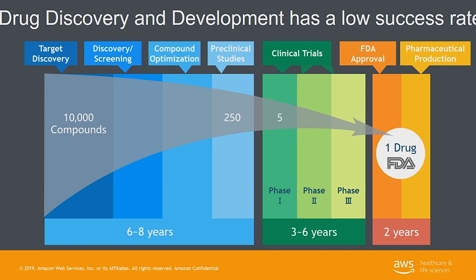Drug discovery and development has a very low success rate. Many candidates start the drug development process, but these are gradually filtered out as they fail more and more tests until eventually, after 10 to 15 years, one or often no drugs actually make it to market — because at all these different levels like discovery, compound optimization, or especially clinical trials, drug candidates are found to not be beneficial or to even be potentially toxic to humans.